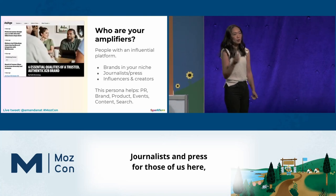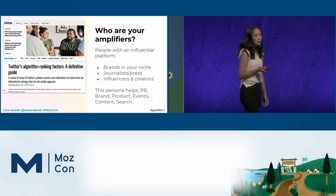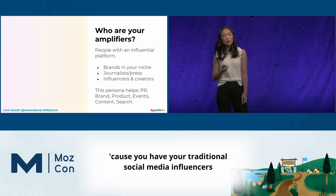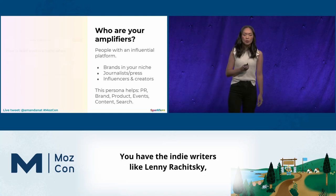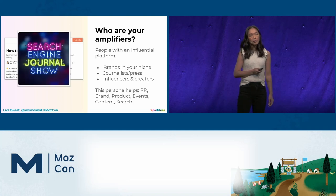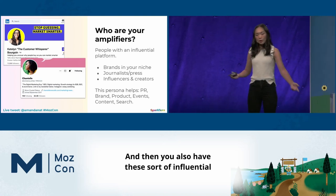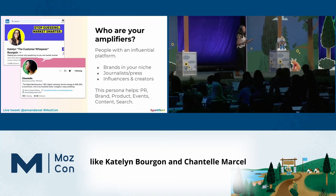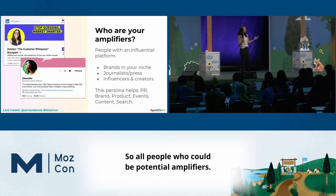For journalists and press, some influential publications are probably Ad Age and Search Engine Land. And influencers and creators span a broad spectrum: traditional social media influencers like Charlie D'Amelio on TikTok, indie writers like Lenny Richitsky who writes about product and tech, podcasts like the Search Engine Journal Show, and influential B2B marketers like Caitlin Burgoyne and Chantelle Marcel on LinkedIn and Twitter — all people who could be potential amplifiers.